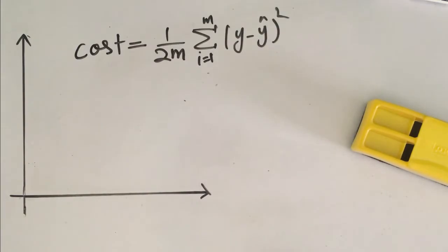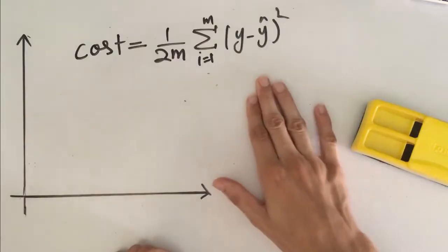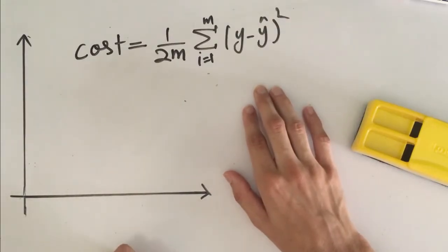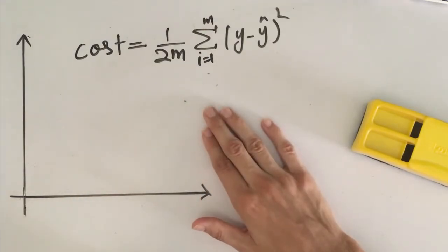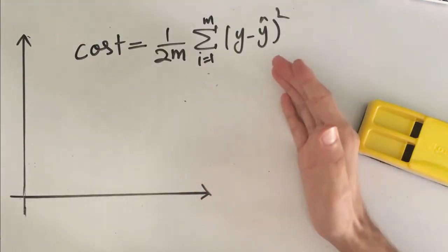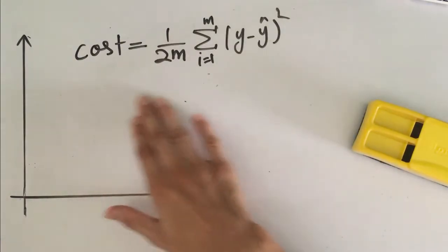We know that linear regression makes predictions by plotting a straight line that fits best to the data set. The way to plot this straight line is by using something called the cost function, which is the measurement of how well the predictions are doing. In other words, the cost value represents the error between the actual predictions and the actual values.